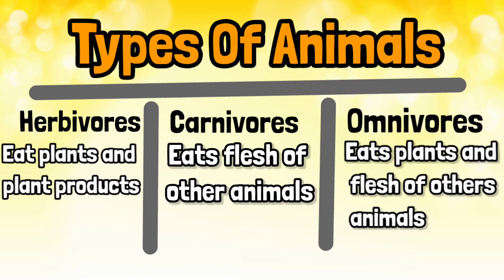Let's have a quick summary. Herbivores: animals that eat plants and plant products are called Herbivores. Carnivores: animals that eat the flesh of other animals are called Carnivores. Omnivores: animals that eat both plants and the flesh of other animals are called Omnivores.